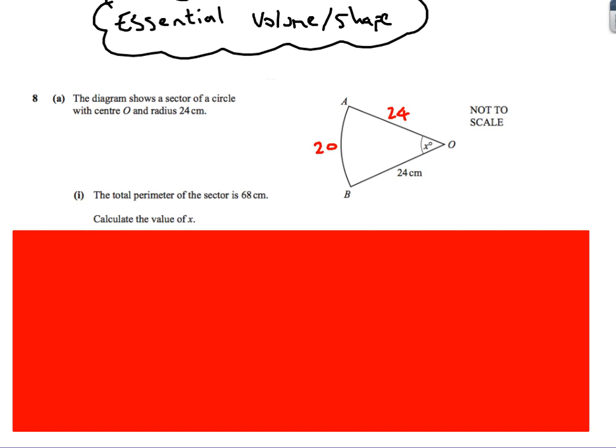Okay, so let's have a look at some volume and shape questions for the 0518, 0607 IGCSE Maths Papers. Here's the first one. We've got a diagram, sector of a circle, center O, radius 24. And it says calculate the value of x.